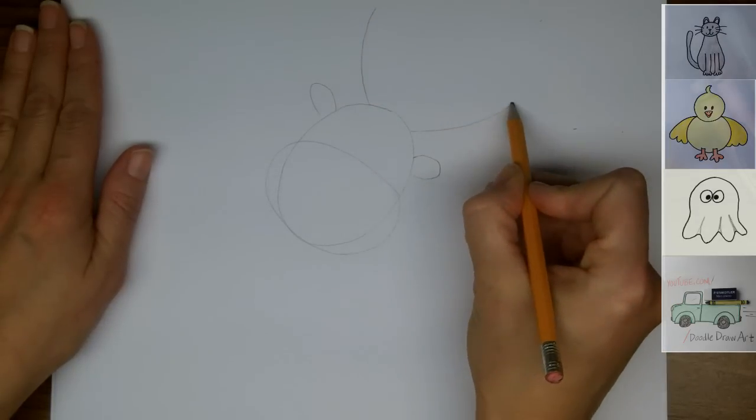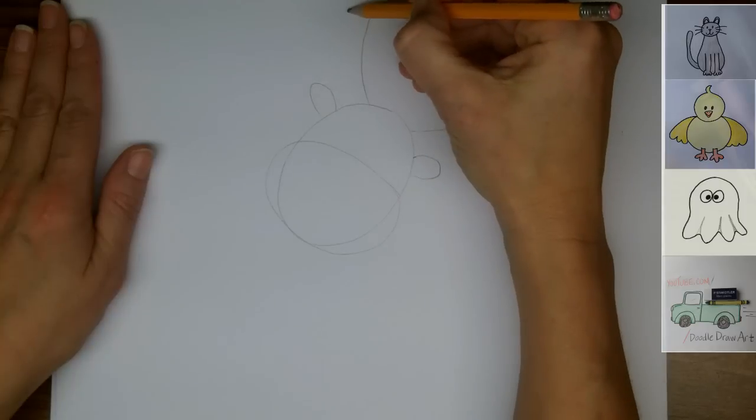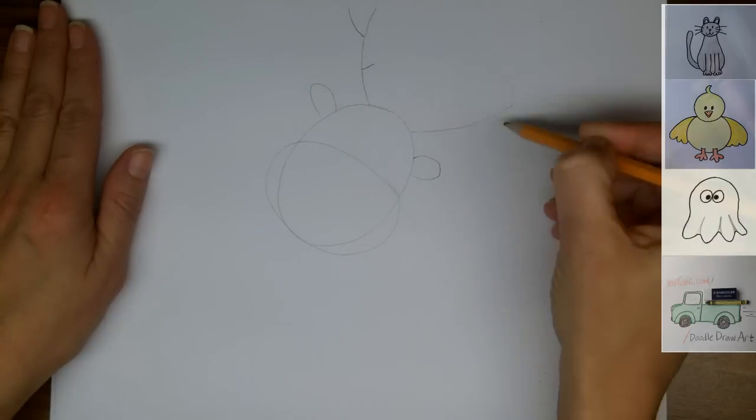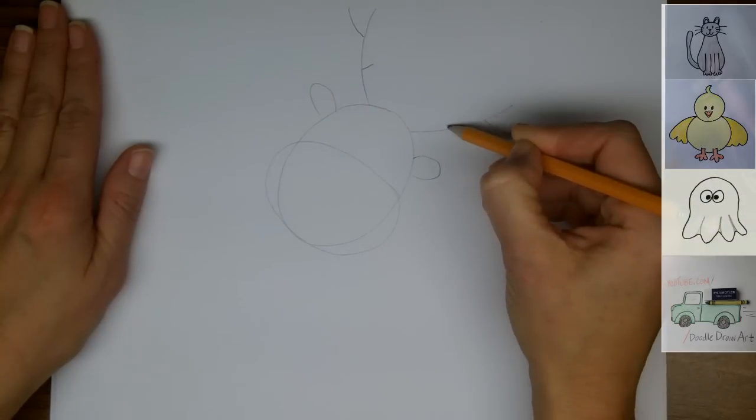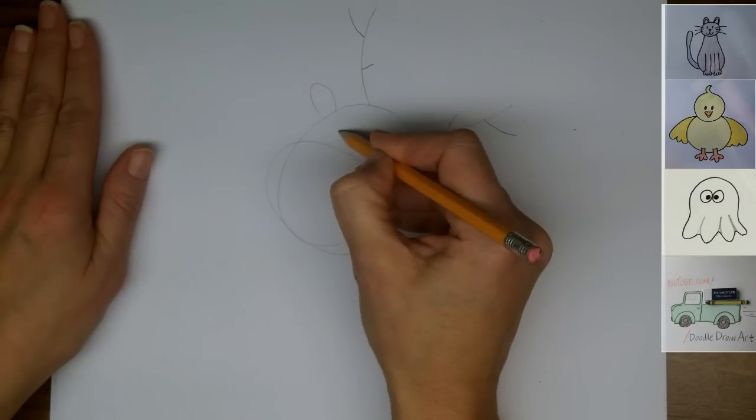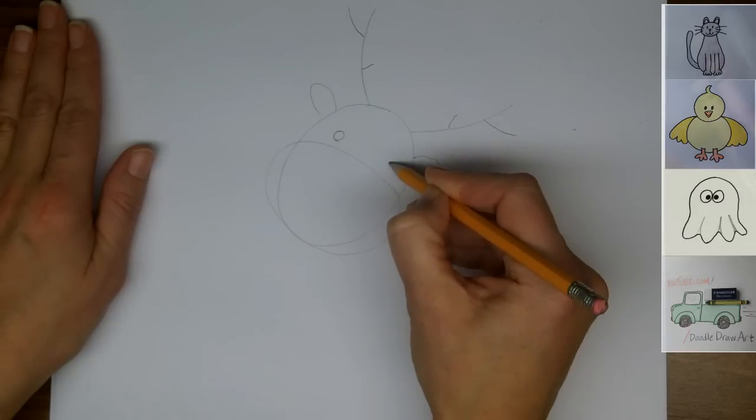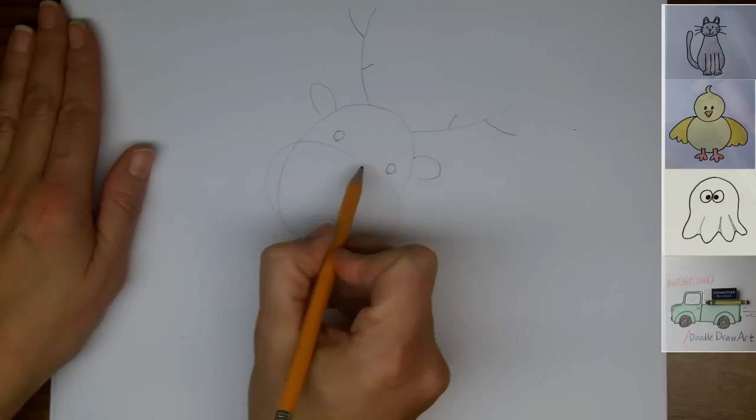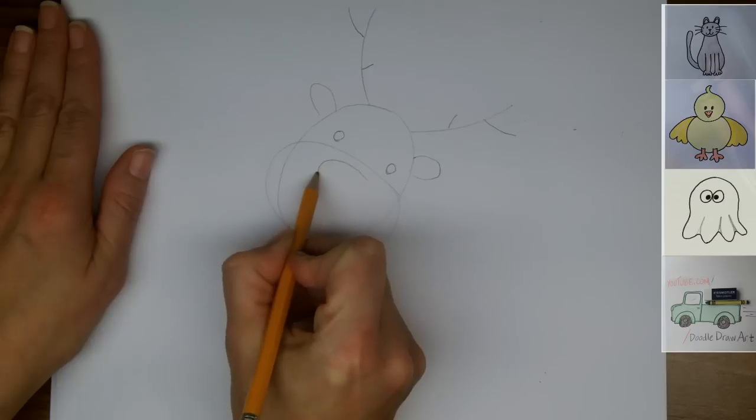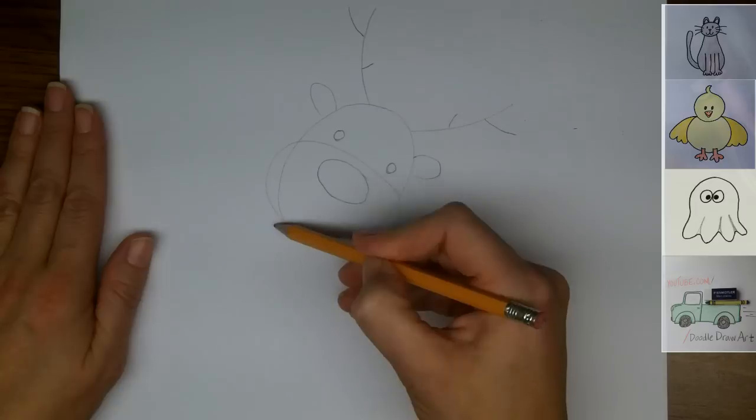For his antlers, we're going to draw curved lines that go up from his head, and then short lines, just two of them, that go out away from the main line. His eyes are round circles, and then his nose is an oval. Good.